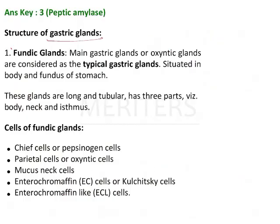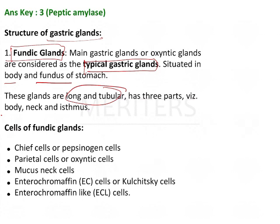Looking at the structure of the gastric gland, we have fundic glands, which are typical gastric glands situated in the body and fundus of the stomach. They are long and tubular. Chief cells produce pepsinogen. Parietal cells (oxyntic cells) produce HCl and Castle's intrinsic factor. Mucus neck cells house the stem cells, and surface mucus cells produce the mucus layer.